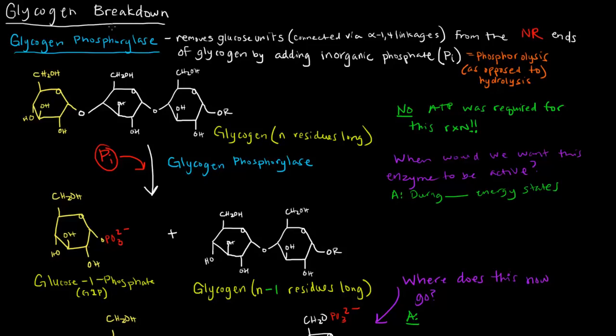In this video, I want to talk about glycogen breakdown. The enzyme involved in glycogen breakdown is glycogen phosphorylase, which we would expect to attach a phosphate, because of the phosphorylase, to glycogen.